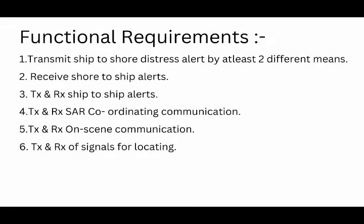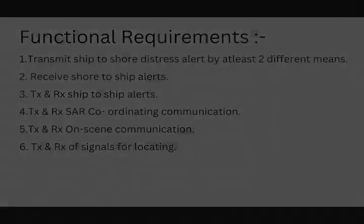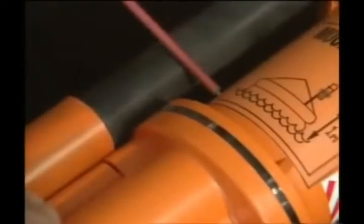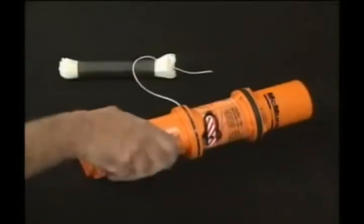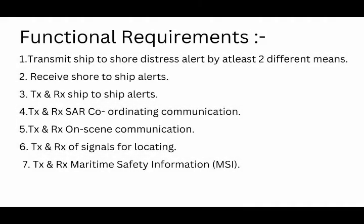Point number six: transmitting and receiving signals for locating. Examples for this are RADAR, which uses 9 GHz for receiving SART signals, and SART itself is included in GMDSS equipment. SART is used for transmitting signals which are helpful for locating distressed personnel.